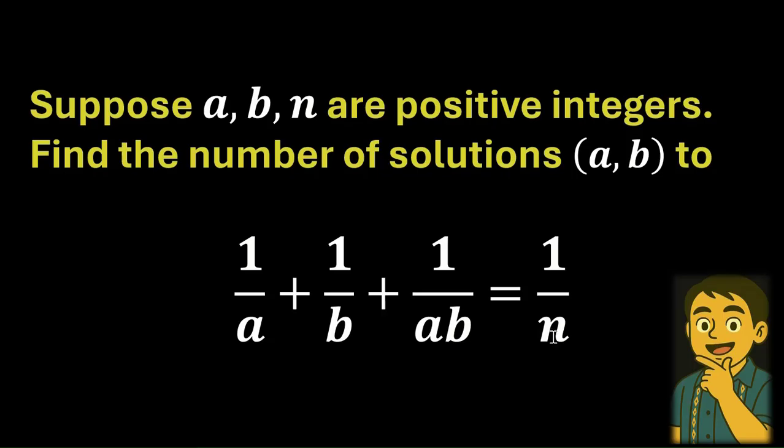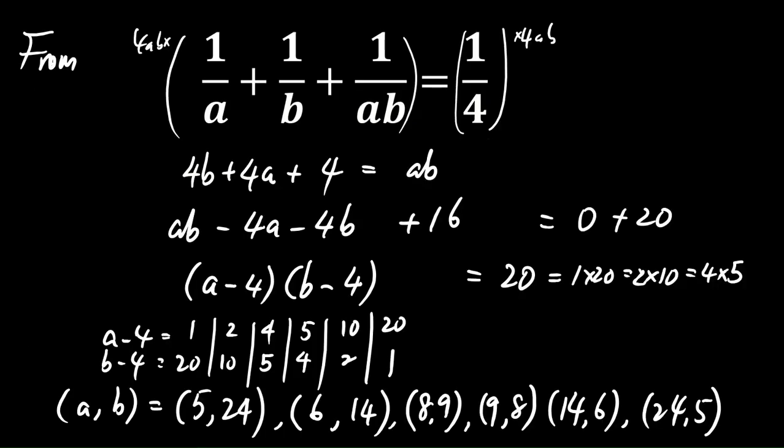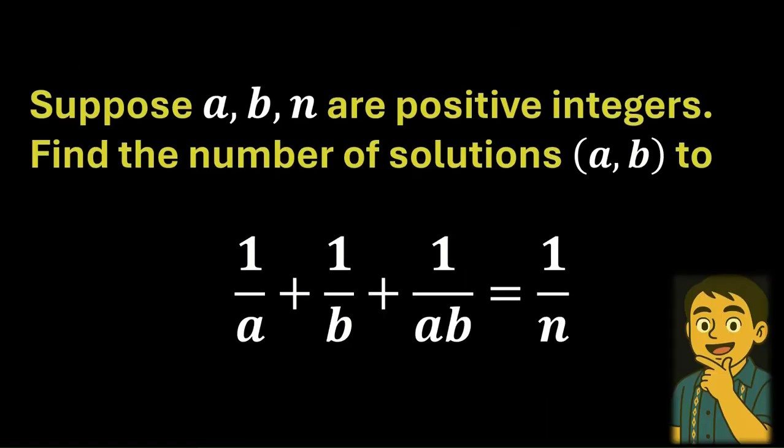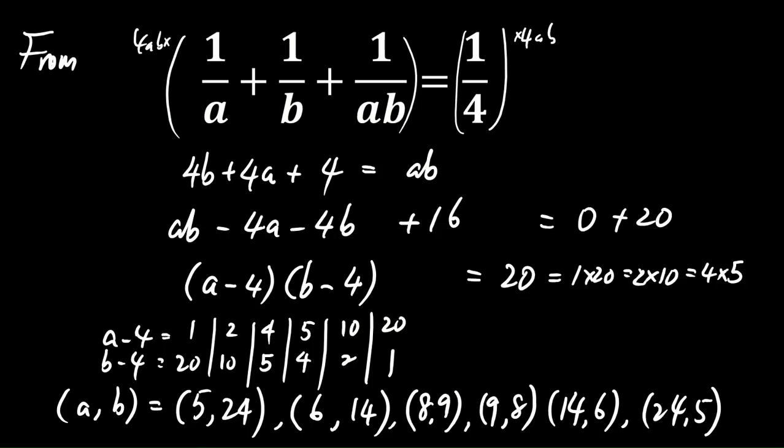We know that when n = 4, there are 6 solutions. So what happens when 4 is replaced by a general positive integer n? How many solutions will you have? Please write your answer in the comments. That's all for today's lesson. Hope you enjoyed it. I'll see you again next time. Bye-bye.